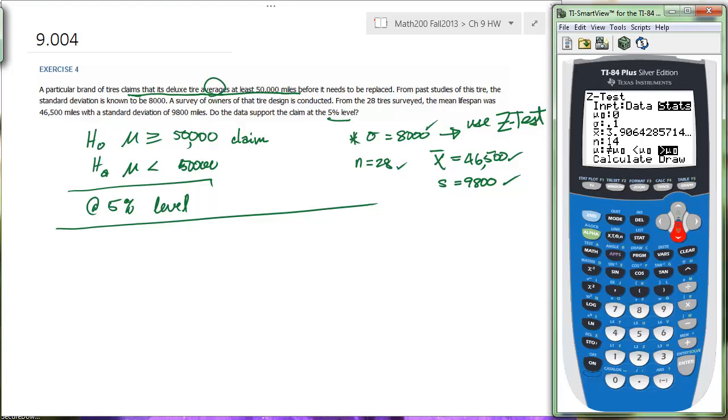The first thing that they ask for in our statistics is what you're claiming. And what you're matching up with the claim is 50,000. The very next thing that they ask for is the sigma because you're using the z-test. They're expecting you to know what sigma is, and that is 8,000. Next, they ask for the mean, that's 46,500. And the number in your sample, we got 28.